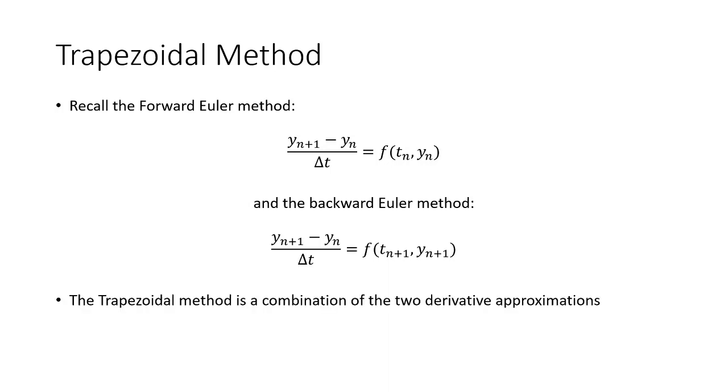Now the trapezoidal method is kind of a combination of these two derivative approximations. And we get the following formula: y of n plus 1 minus y sub n over delta t equals 1 half times the function at t sub n and y sub n plus the function at t sub n plus 1 and y sub n plus 1.